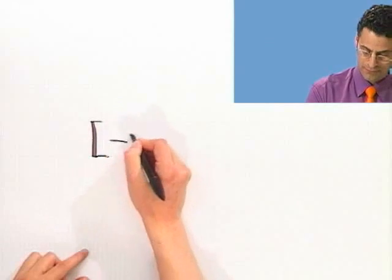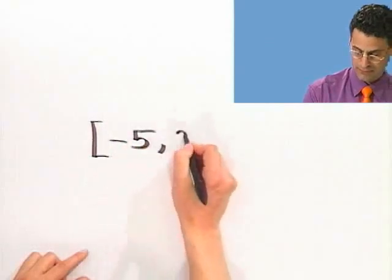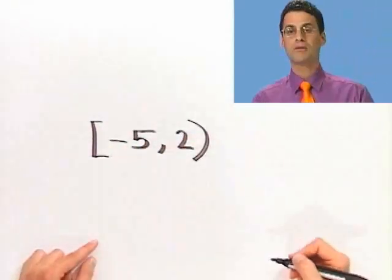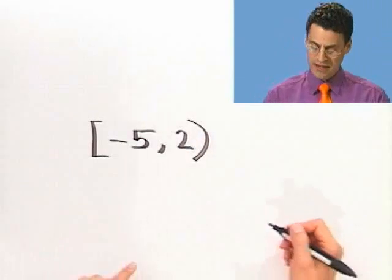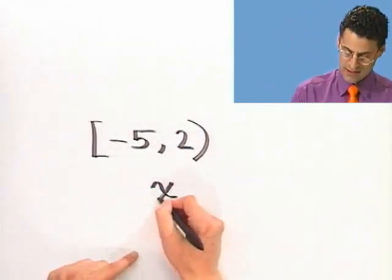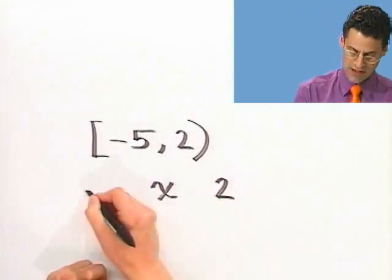So suppose I said this. What would that mean? Well, that would mean these are values of x that are between two and minus five.